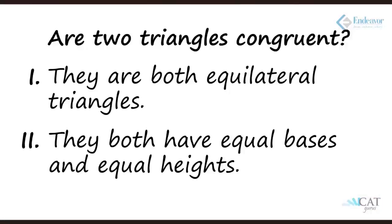We need 100% surety — we can't leave any chance. Looking at statement two independently: they both have equal bases and equal heights. With equal bases and equal heights, we can make many different types of triangles with different angles and orientations. It could be a right-angle triangle or not. So statement two alone is also not giving us a clear answer.